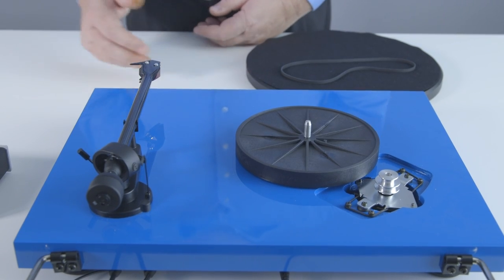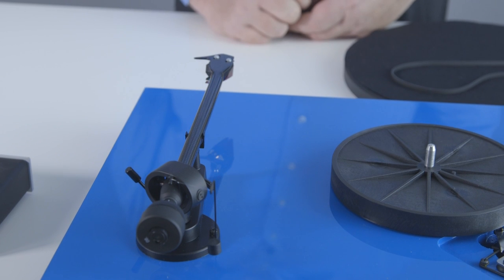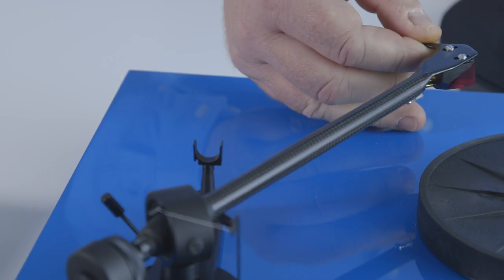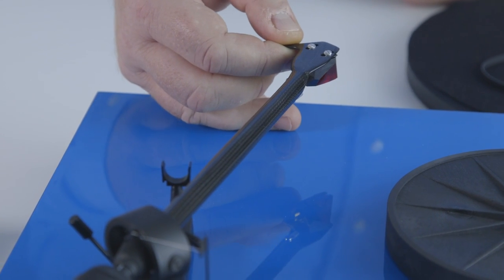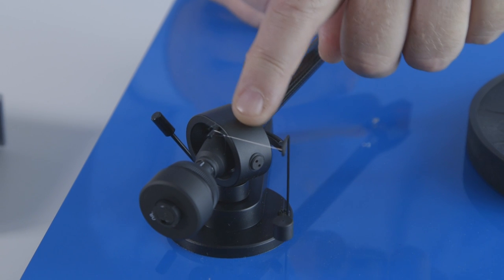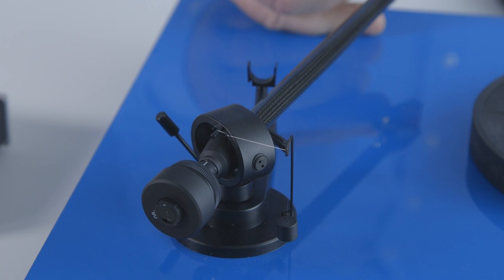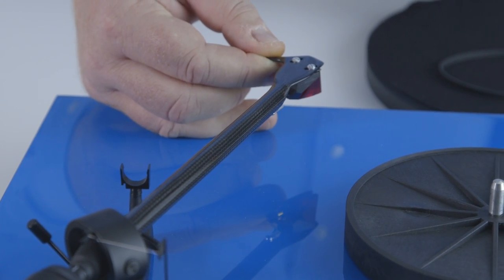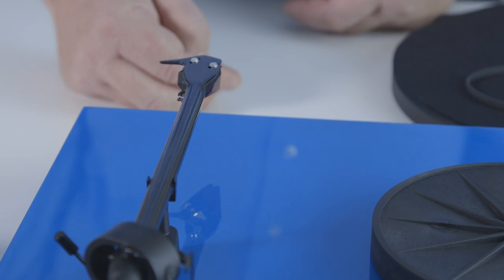The final important parts of course are the tonearm and the cartridge. The tonearm has to allow the cartridge to move freely across the record when it's reading the information on the record grooves. That means the bearings on the tonearm have to be very precisely adjusted so that they do not cause any restriction in that movement. Such a restriction would result in mistracking, distortion, or even worse, skipping.